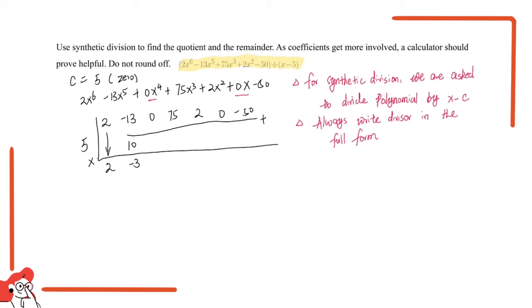Then we do multiplication again. 5 times -3 equals -15. Plus 0 equals -15. Times 5 equals -75. Plus 75 equals 0. 5 times 0 equals 0, of course. And 0 + 2 equals 2. Times 5 equals 10. Plus 0 equals 10. And times 5 equals 50. Plus -50 equals 0.